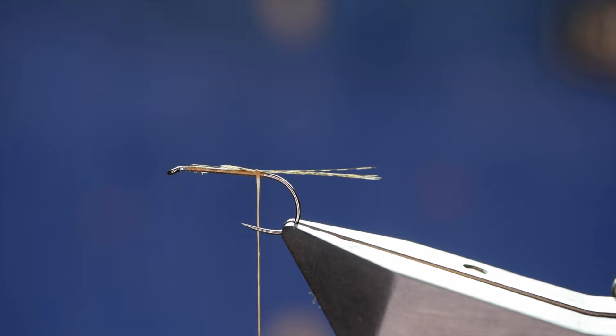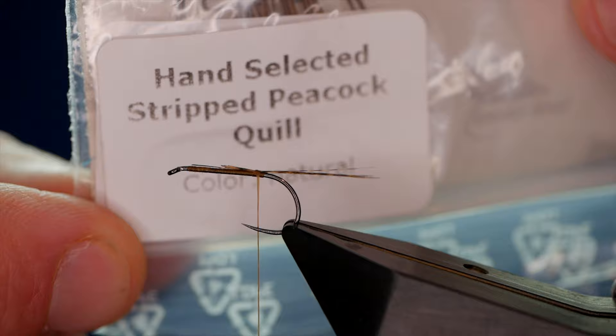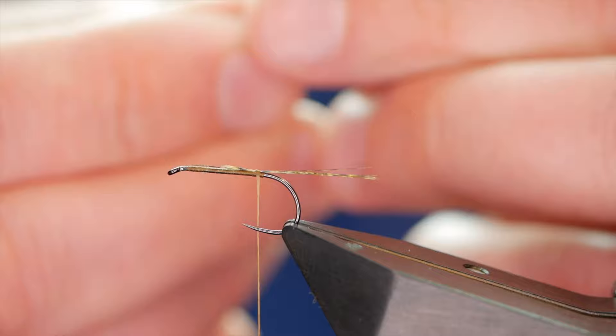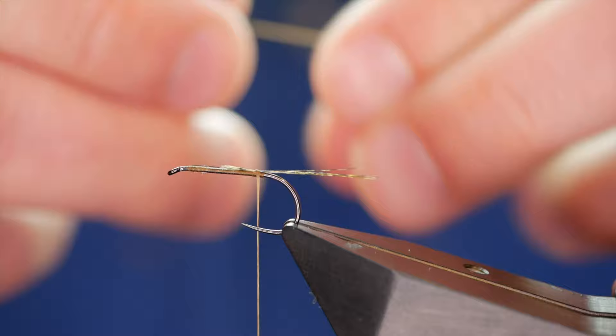Now before I secure it in I'm going to lift the feather up and just trim away some. And as I go back up, I want to catch in my ribbing material. And what I'm using to rib is some hand-selected peacock herl that's been stripped. It's natural. You can get these in different colours. I do like the brown as well but I'm using natural today. Now I don't want the really thin part that you see here. So I'm just going to trim that.